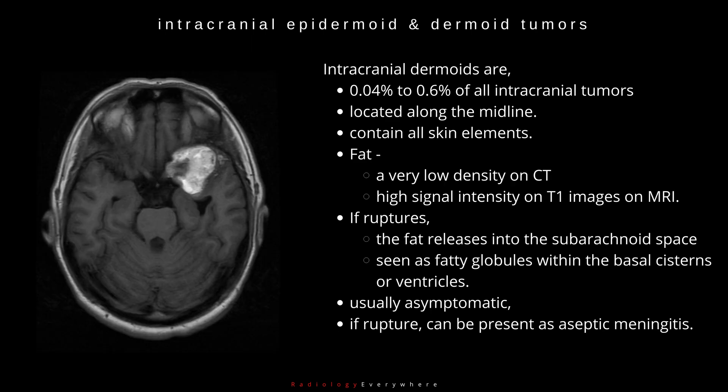Intracranial dermoids are 0.04% to 0.6% of all intracranial tumours. They are located along the midline and contain all skin elements. Fat appears as very low density on CT and of high signal intensity on T1 images on MRI.